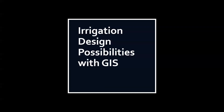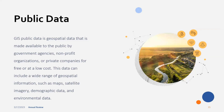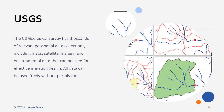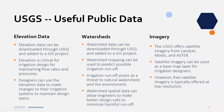GIS public data is geospatial data made available to the public by government agencies, nonprofit organizations, or private companies for free or at low cost. The data can include maps, satellite imagery, demographic data, and environmental data. The US Geological Survey has thousands of relevant geospatial data collections, including maps, satellite imagery, and environmental data that can be used for effective irrigation design. All data can be used freely without permission. Some of the most useful data they have includes elevation data, watershed data, and imagery.